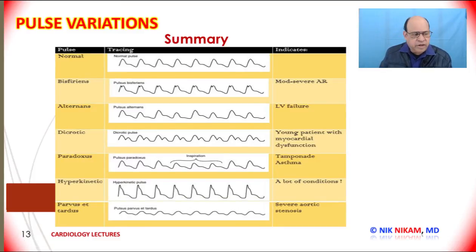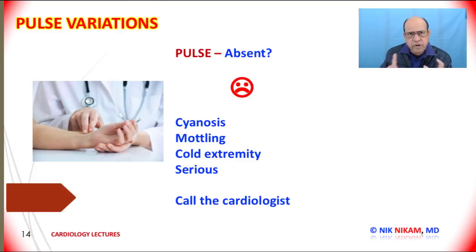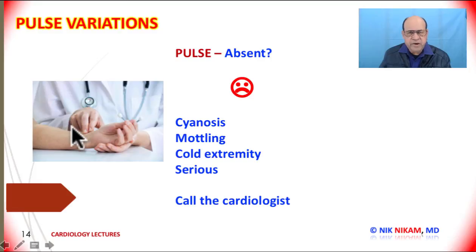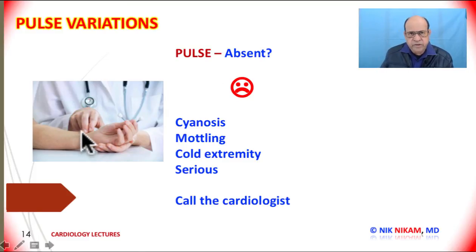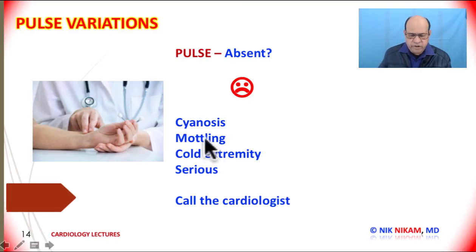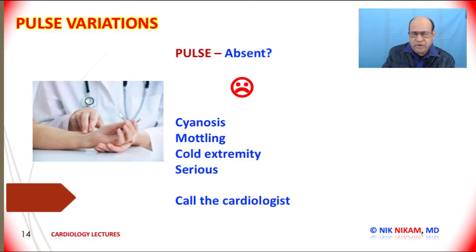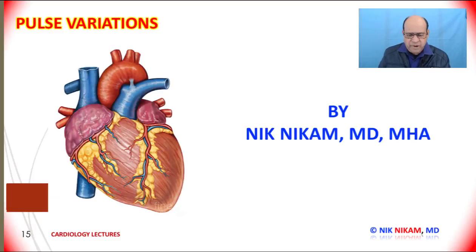One more variation: absent pulse. If a nurse calls you after a cardiac catheterization from the arm and cannot feel the patient's pulse, what do you do? This patient had tubes running through their arteries. To verify, look for cyanosis, mottling, and cold extremity. If these signs are present, there is an occlusion of the artery with decreased circulation — and it's time to call the cardiology team.